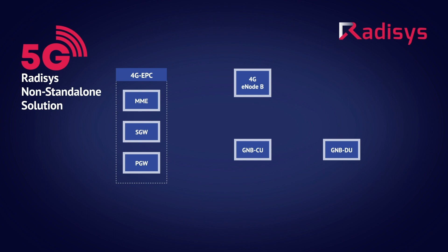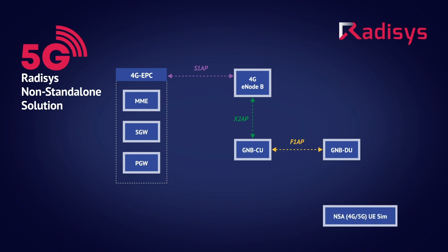The 5G gNode B acts as a secondary node complementing the 4G E-node B in the system. The Radisys disaggregated CU/DU architecture leverages 3GPP release 15.3.0 compliant interfaces. For the user equipment, a simulated Radisys 5G NSA UE is used. The 5G NSA UE simulator comprises both 4G and 5G UE stack capabilities as per 3GPP release 15.3.0.